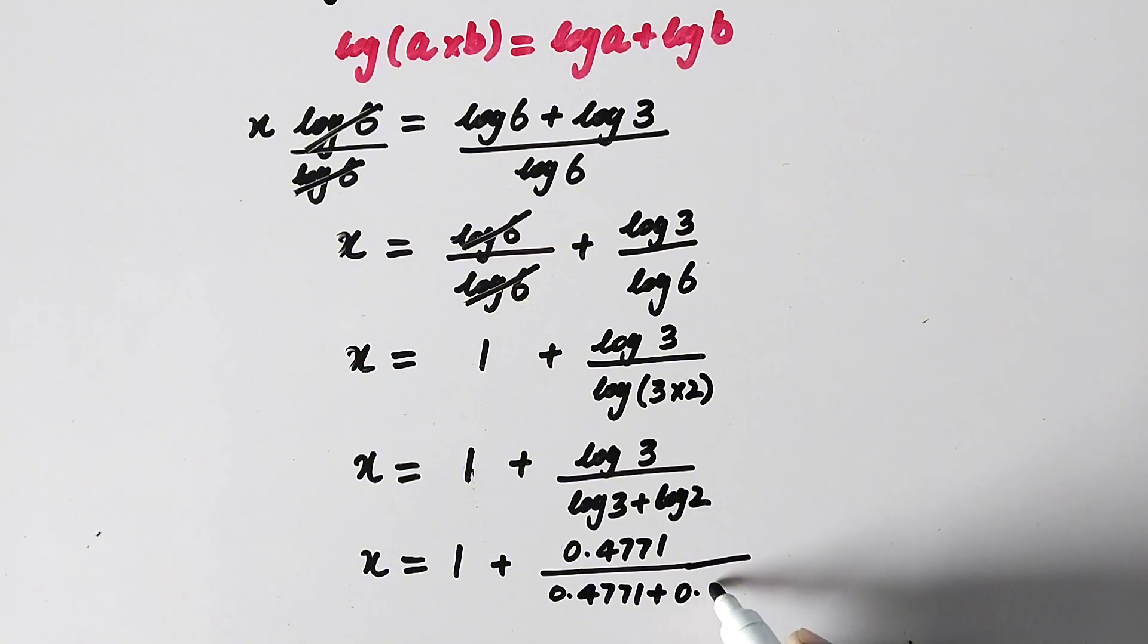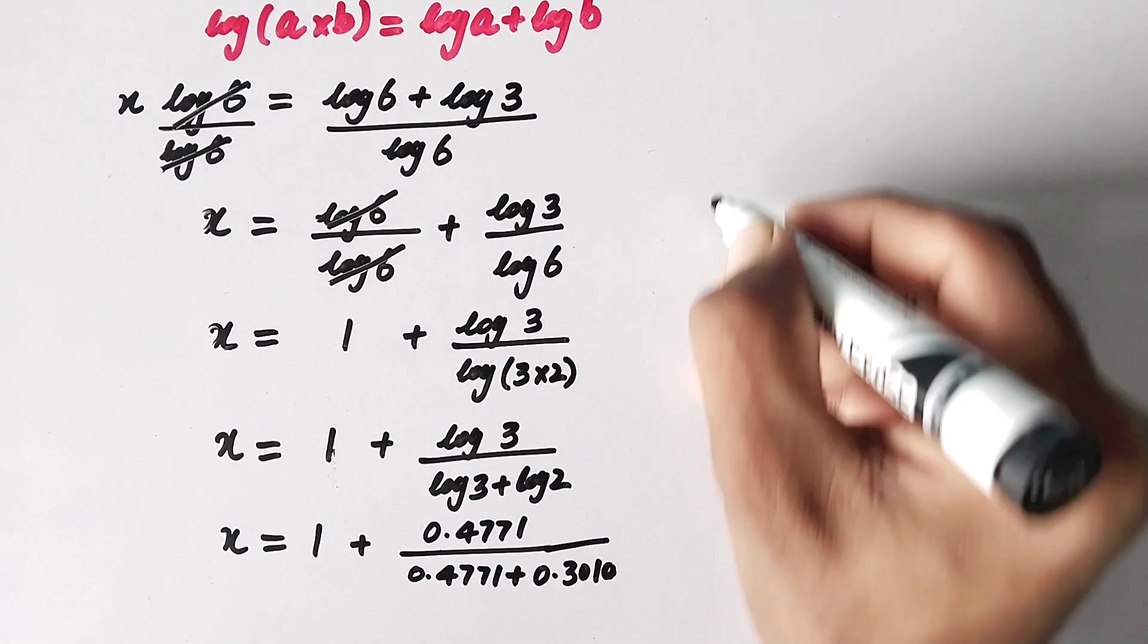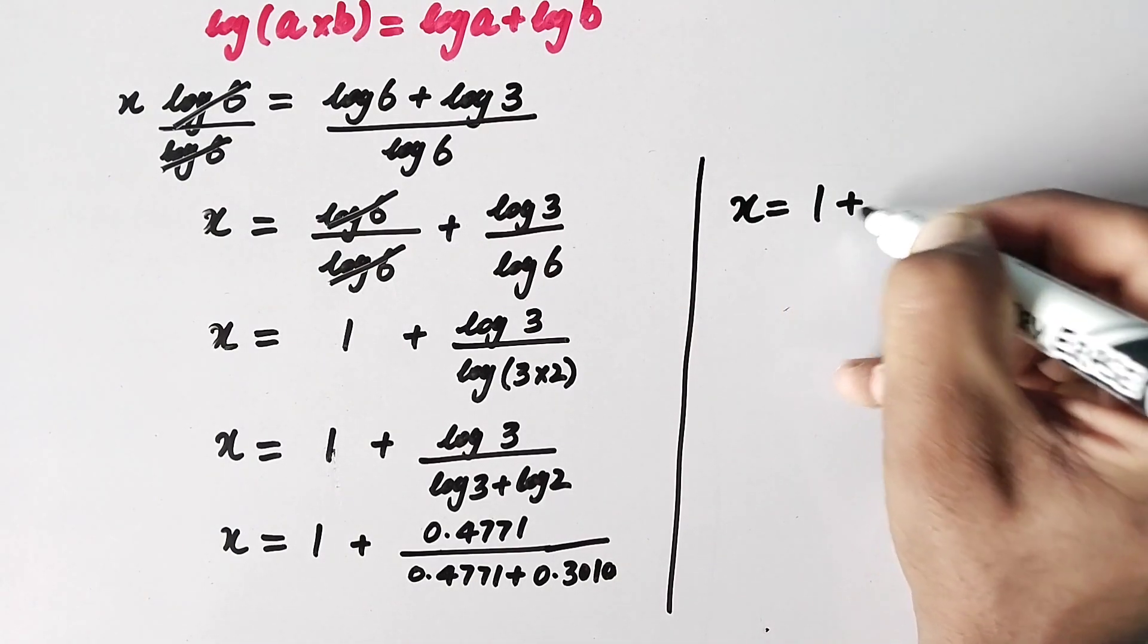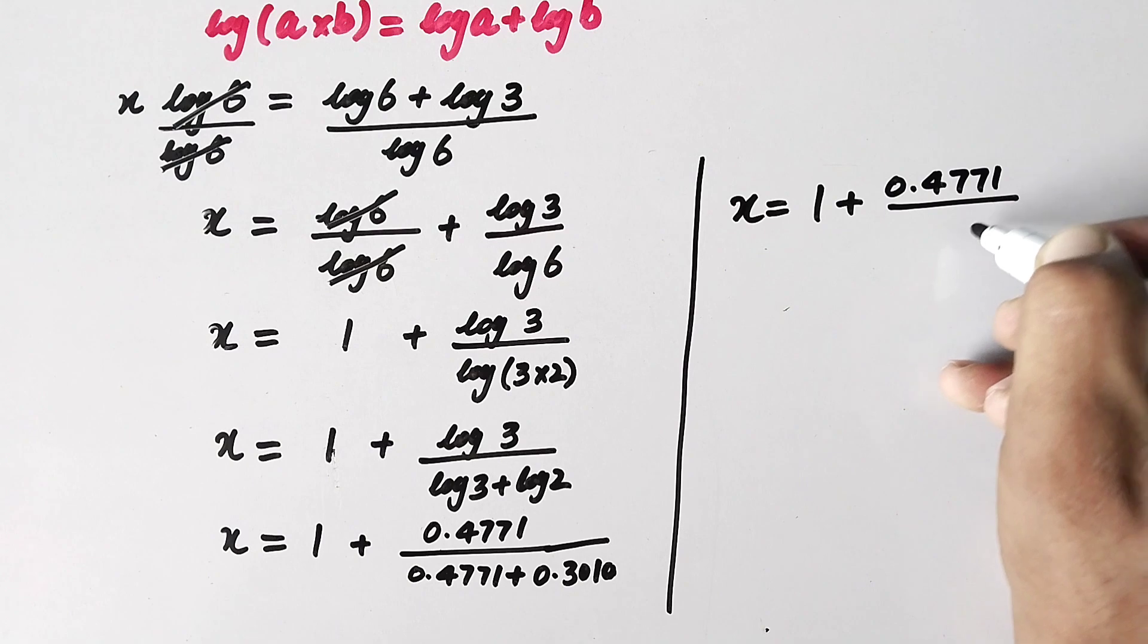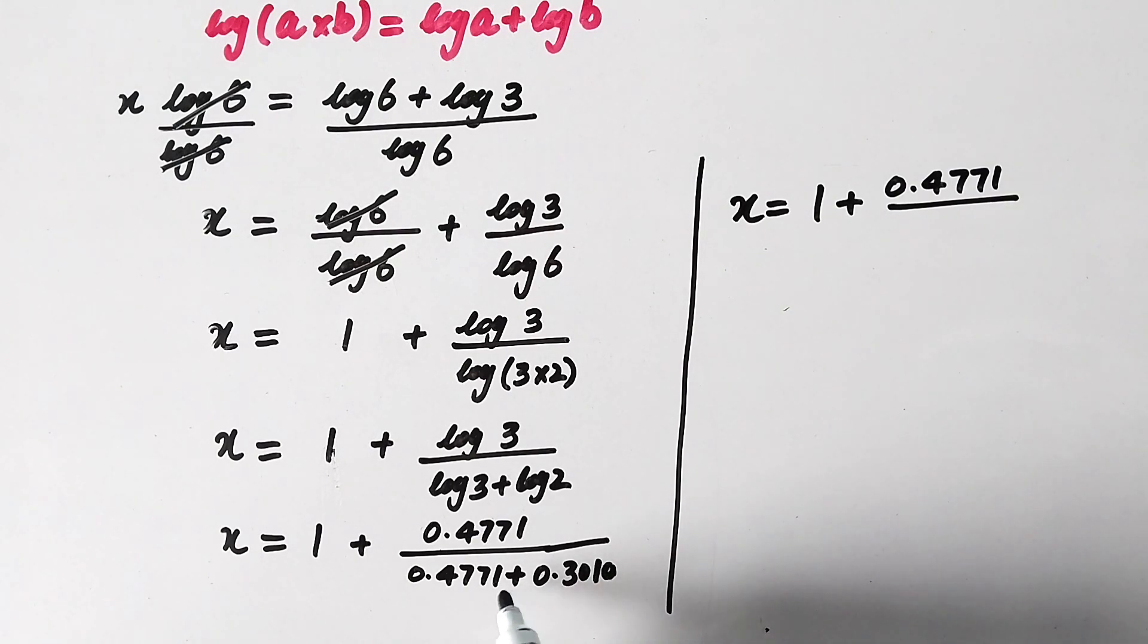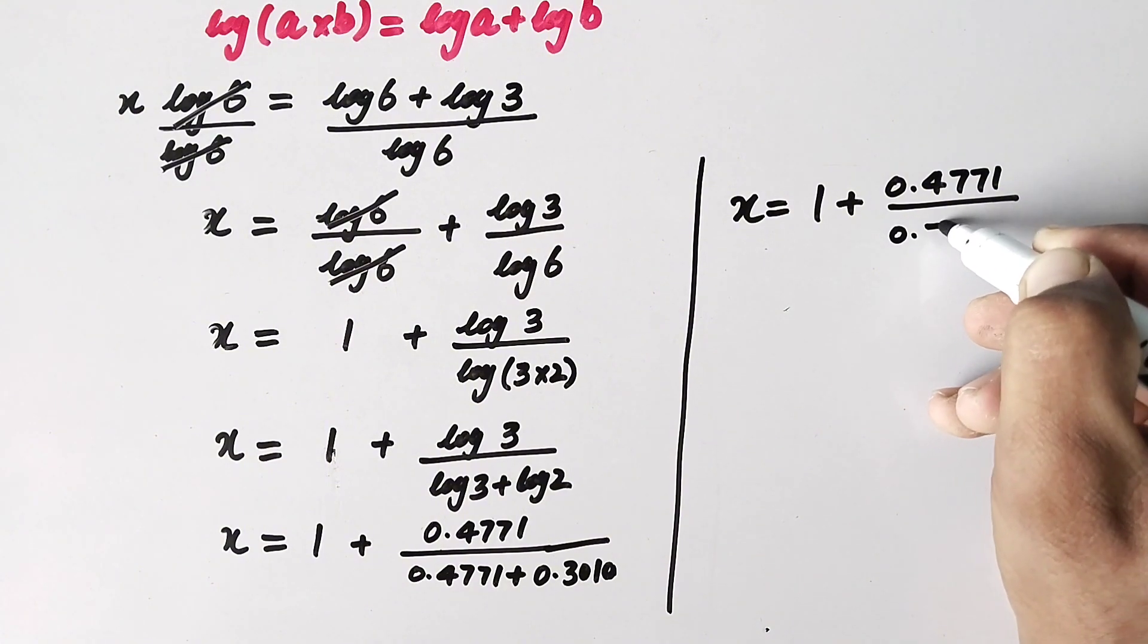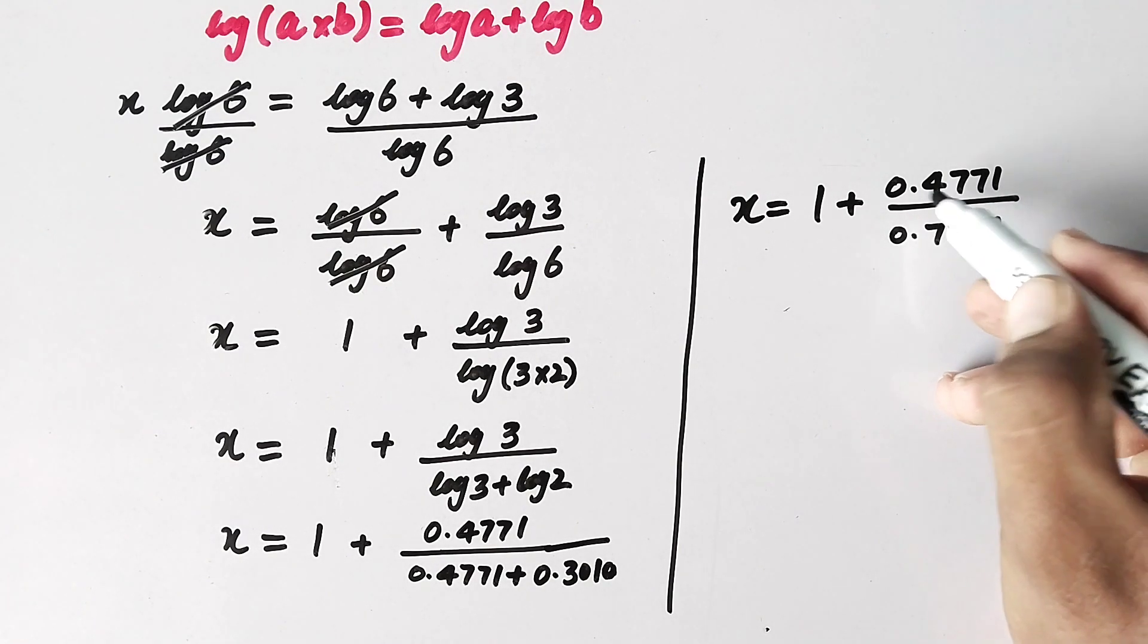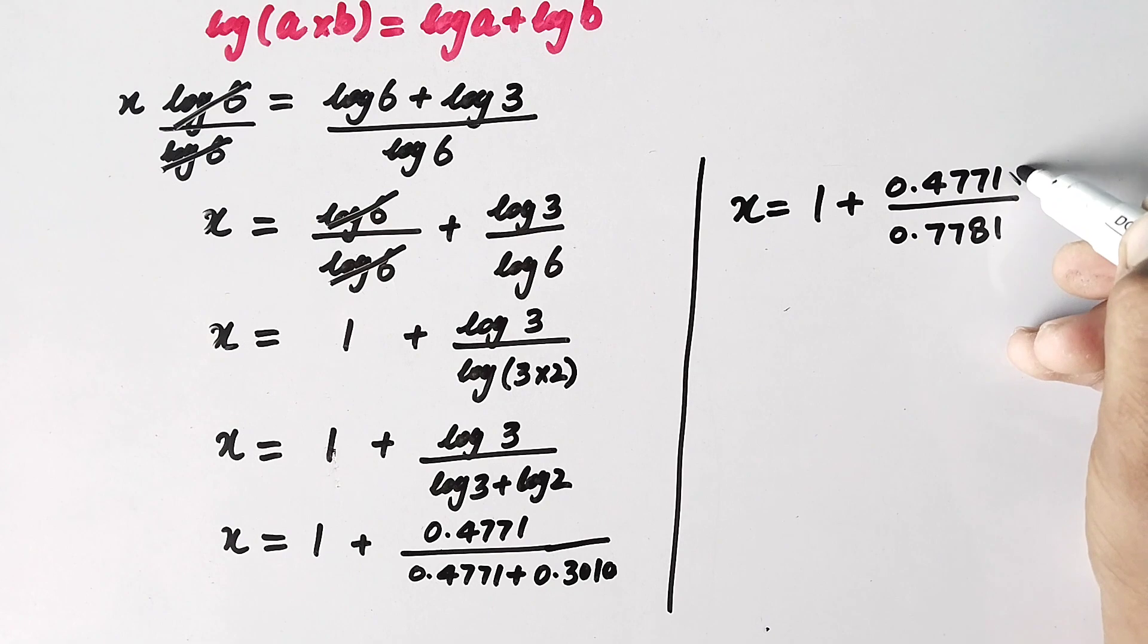The value of log of 3 is 0.4771 over 0.4771 plus log of 2, which is 0.3010. In the next step, x will be equal to 1 plus 0.4771 over 0.7781.